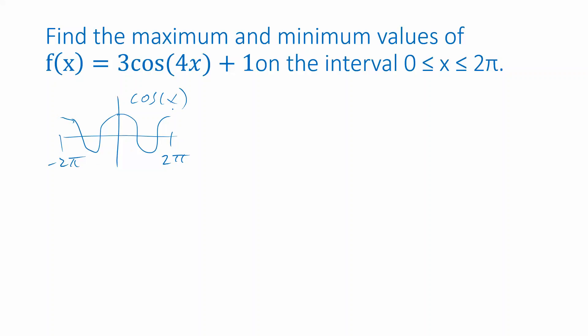Cosine of 4x, what's that going to do? Well, it's just going to be a horizontal compression of cosine of x. Cosine of 4x is going to oscillate faster. So from 0 to 2π, instead of going through one oscillation, it will go through four oscillations.